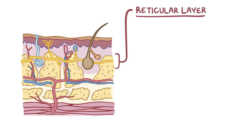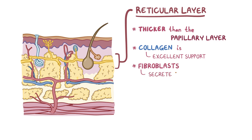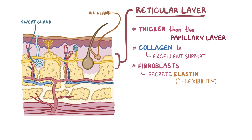The reticular layer of the dermis is even thicker than the papillary layer. The collagen in the reticular layer is packed very tightly together, making it excellent tissue support. In addition, fibroblasts in the reticular layer secrete elastin, which is a stretchy protein that gives skin its flexibility. The reticular layer also contains the skin's accessory structures like oil and sweat glands, hair follicles, lymphatic vessels, and nerves, and all of the blood vessels that serve these tissues. A type of nerve ending found here detects pressure or vibration, which allows you to feel someone grabbing your arm.